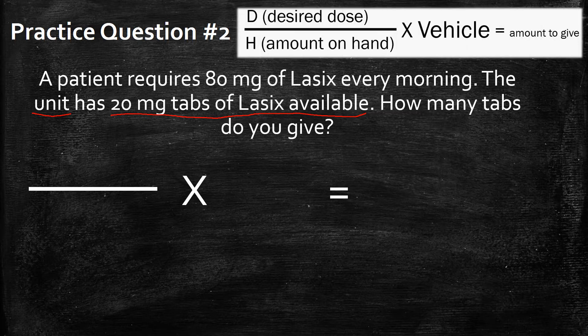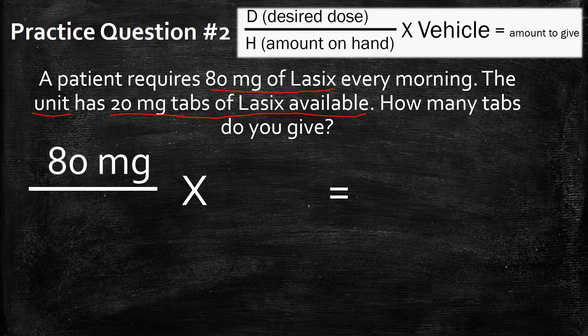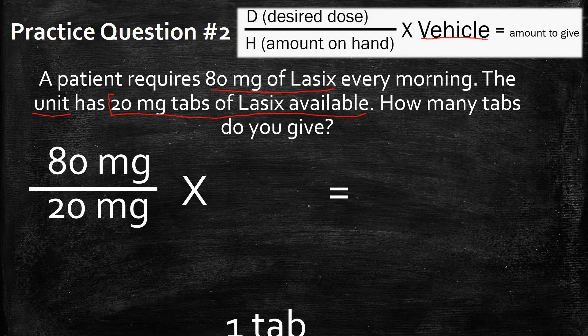So we've got the desired dose, amount on hand, and vehicle. The desired dose is obviously going to be 80 milligrams because the patient requires 80 milligrams of Lasix. The unit has 20 milligram tabs available, so that's your amount on hand — you put 20 milligrams. And the vehicle is going to be one tab, because it's 20 milligrams per one tab. That's how they're going to be getting this medication.